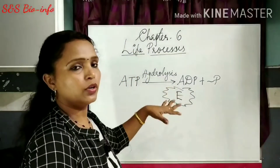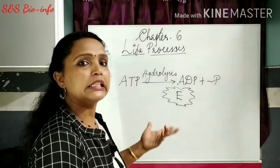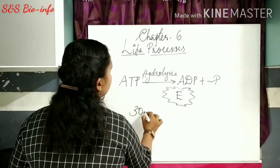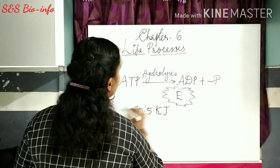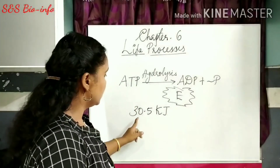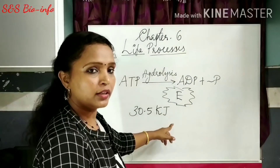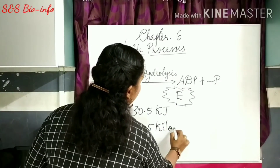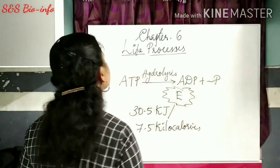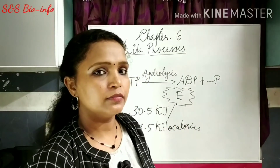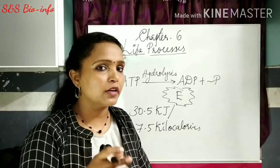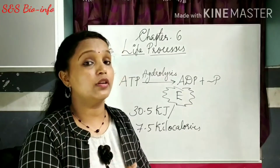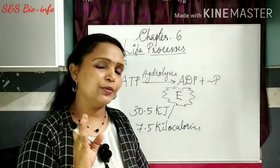That energy is utilized for various biosynthetic activities of the body. One mole of ATP releases 30.5 kilojoules of energy, or 7.5 kilocalories. I hope you understood what is respiration, what are the two types of respiration, and how it takes place in different organisms in different situations. Thank you and have a nice day.